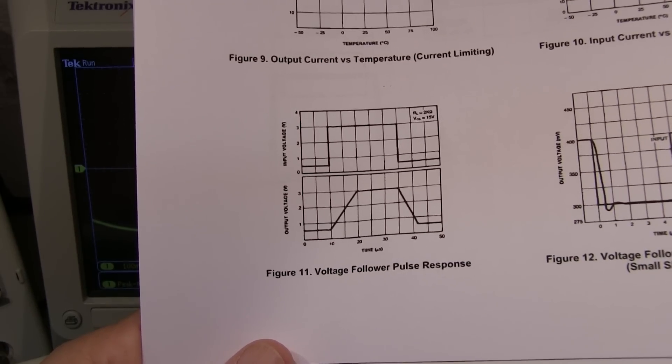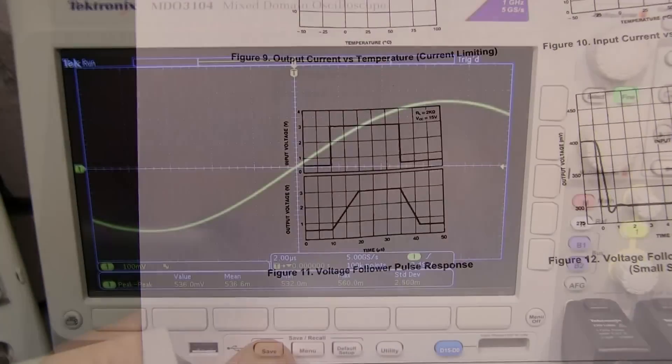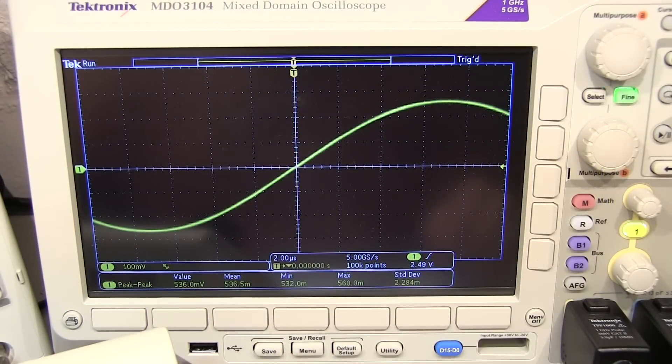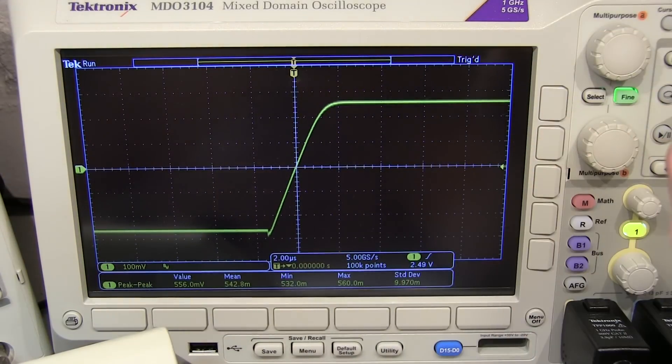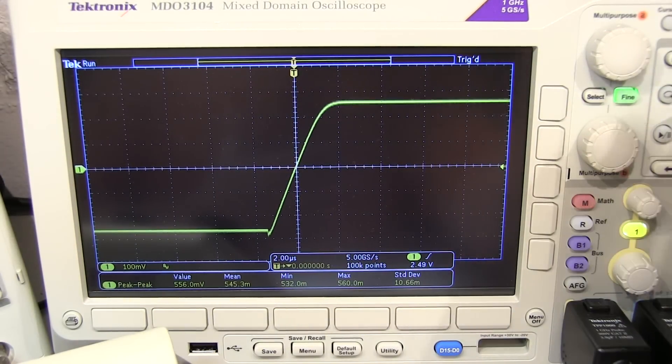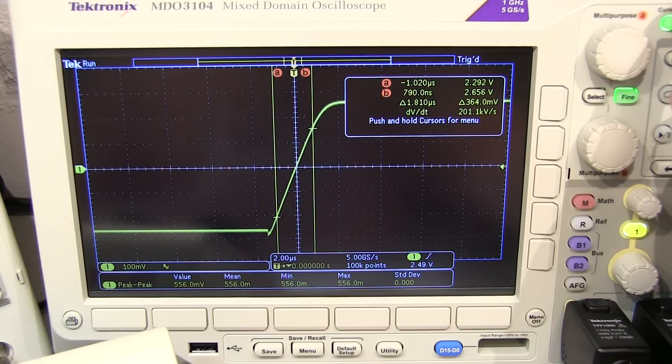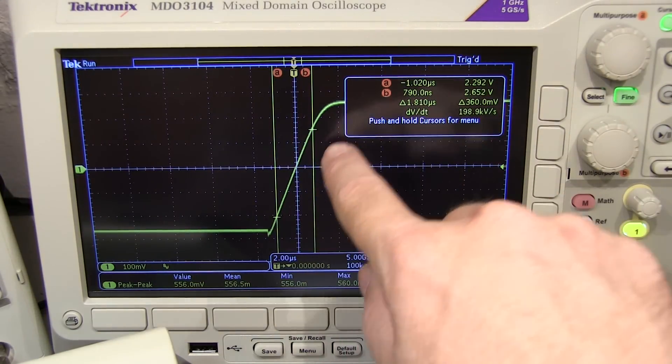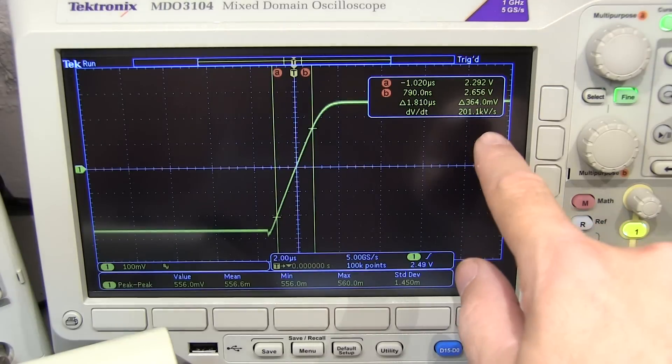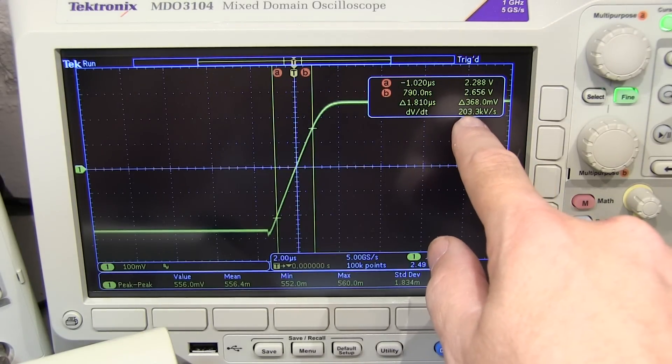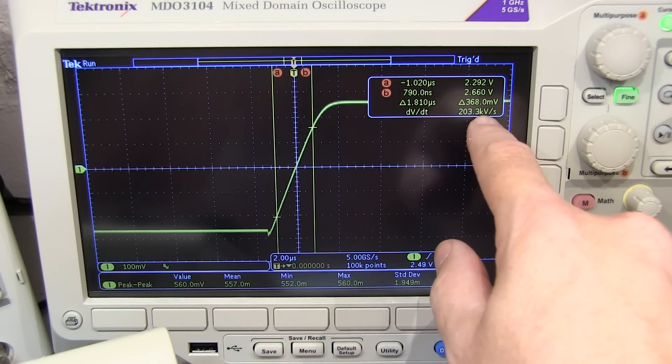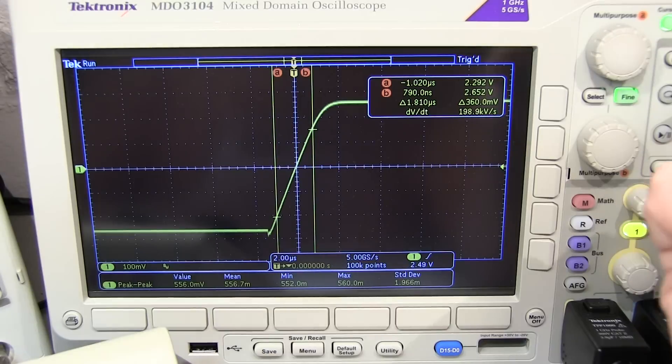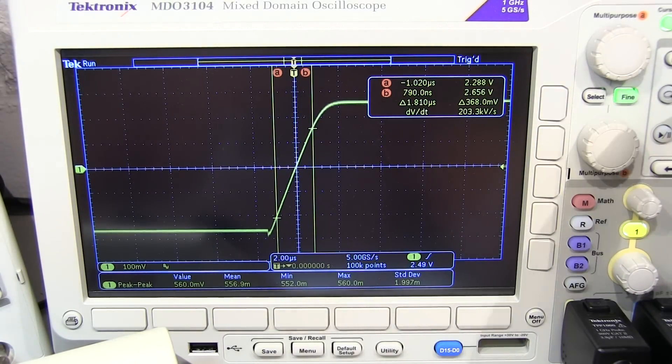So let's look at what this op amp is doing. If I switch the waveform over to a square wave, I can see that slope being governed by the slew rate limit. If I just turn a pair of cursors on here and have those cursors positioned on that, I can read directly off the scope that we're looking at about 203 kilovolts per second, which also translates to about 0.2 volts per microsecond. So that basically lines up with about what we saw in the datasheet.